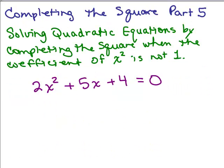This is part 5. We're going to continue solving quadratics by completing the square when the coefficient is not 1. So here's another example. We have 2x squared plus 5x plus 4 equals 0. Since the coefficient of x squared is not 1 and it's an equation, we could divide everything by that coefficient of 2 so that we can get an equation with a 1x squared.